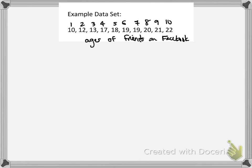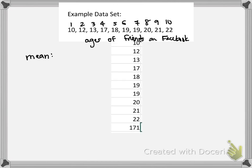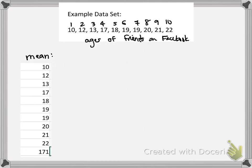So let's start looking at the mean. To calculate the mean, we have to first go through and sum all of the values. I used an Excel spreadsheet and found the sum of 171. Then we divide by the number of data points, which is 10 — so that's about 17.1.